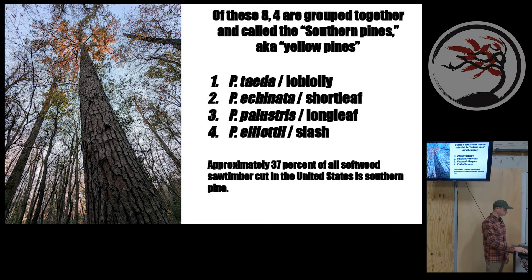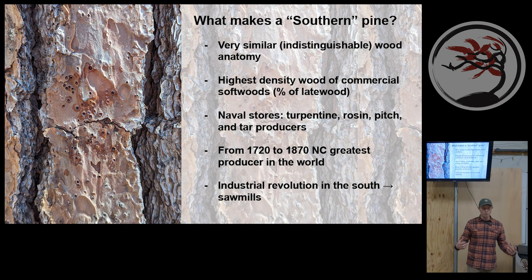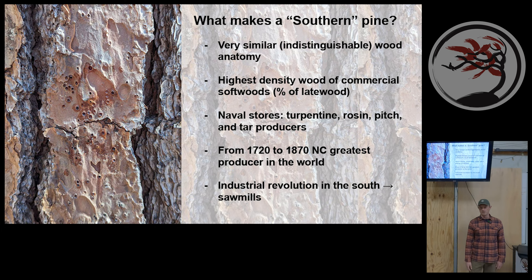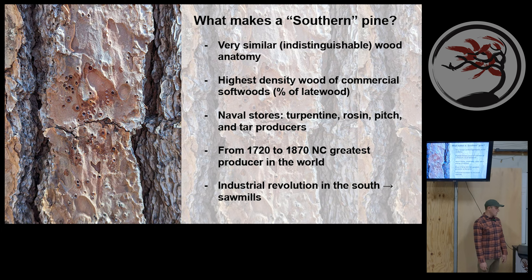From a woodworker's perspective, the wood of these four southern pine species is functionally indistinguishable — they're all used for similar purposes. Loblolly is often preferred because it has the fastest growth rate especially when young, it's more adaptable to problematic soil types, and its range is wider than longleaf pine.